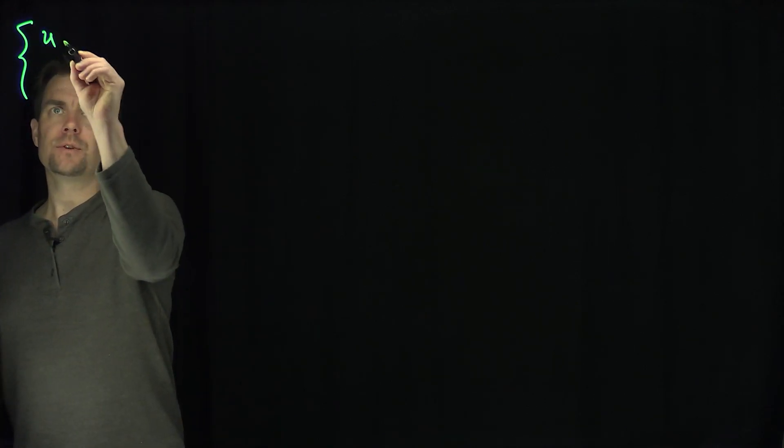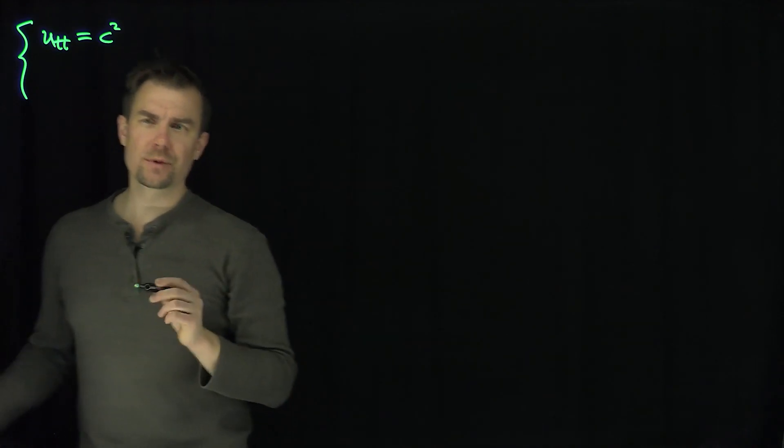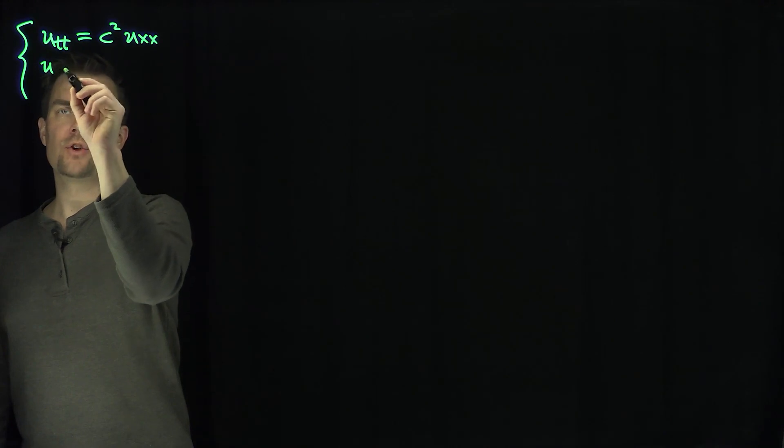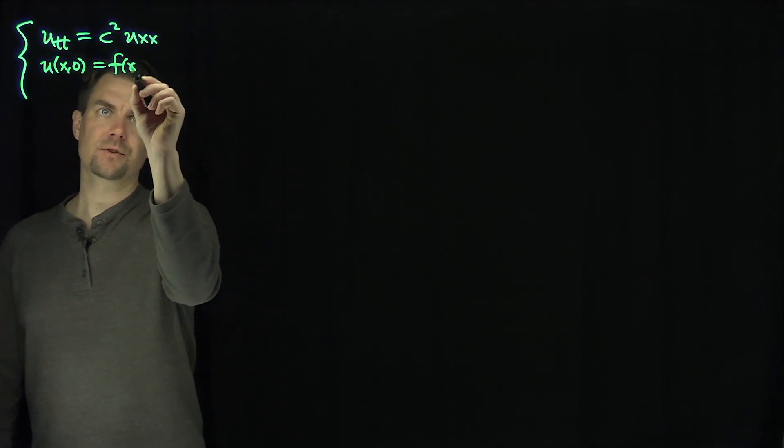Hello students, in this video we'll discuss the solutions of the wave equation over the entire real line using the Fourier transform. Our PDE we'll consider now is Utt, so two time derivatives, is c squared, where c is usually the speed of light, Uxx, and then we have two initial conditions. We have that U of x and 0 is a function f of x, sufficiently smooth.